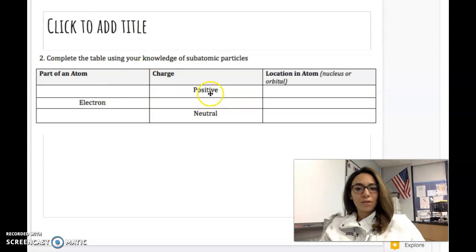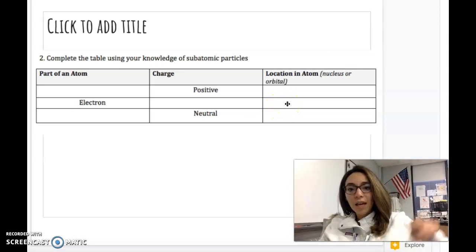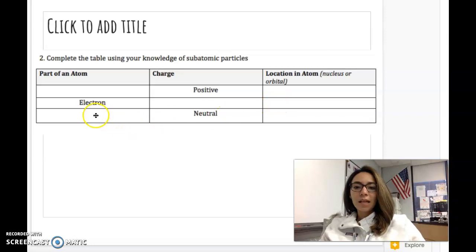Alright. So the positive charged particle of the atom should be a proton. So right here you should write proton, and this location is in the nucleus, right, in the center of the atom. Electron has a negative charge, and this is located in the orbital around the outside of the atom. And lastly, a neutron has a neutral charge. That means no charge. And that is also located in the nucleus.